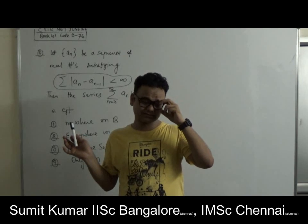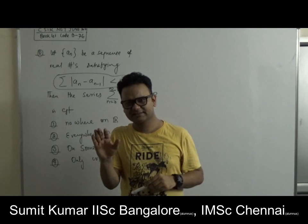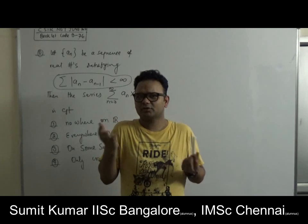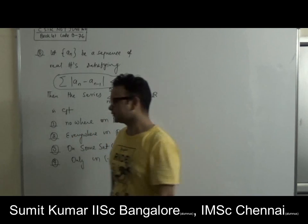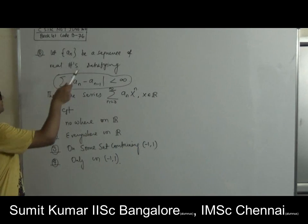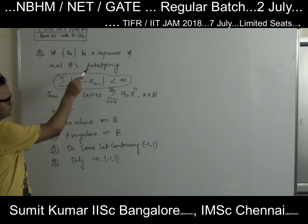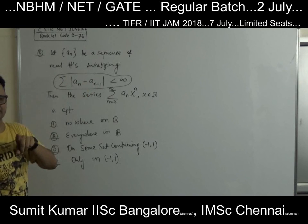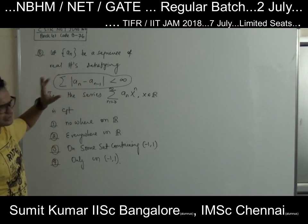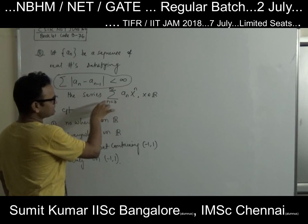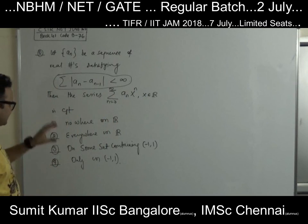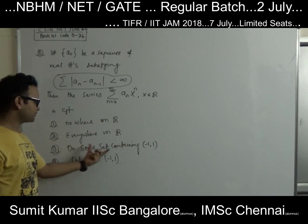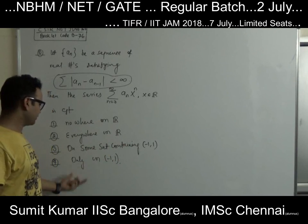Whatever question I have picked, this is asked in NET June — but forget that, let's try to understand the concepts involved in it. So the question is: a sequence {Aₙ} of real numbers satisfying the condition that the series with terms |Aₙ - Aₙ₋₁| converges — that is, this series is absolutely convergent. Using that information, what can you say about the power series Σ Aₙ xⁿ? The options are: nowhere on ℝ, everywhere on ℝ, on some set containing [-1, 1], or only on [-1, 1].